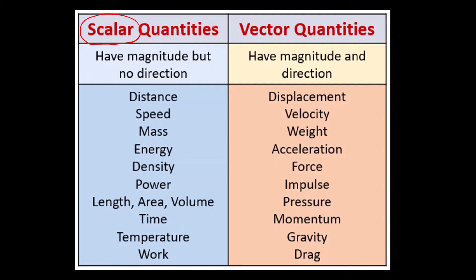One is scalar quantities and another is vector quantities. Scalar quantities are those physical quantities that depend only on magnitude — meaning the absolute value of that particular physical quantity — and they do not depend on direction. Vector quantities are those which depend on both magnitude and direction. Here are some examples of each.